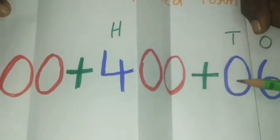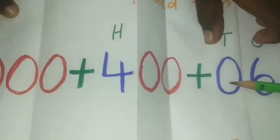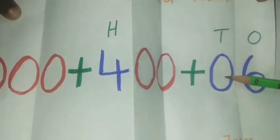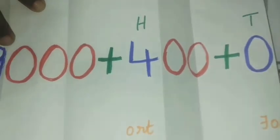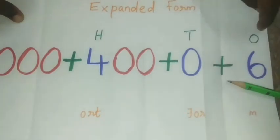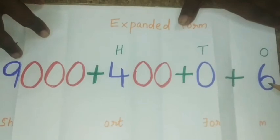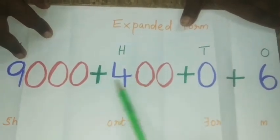So, in 10th place, 0 is there. Wherever the 0 comes, the place value of 0 is 0. So, in 1's place, the number is 6. So, we got the expanded form.